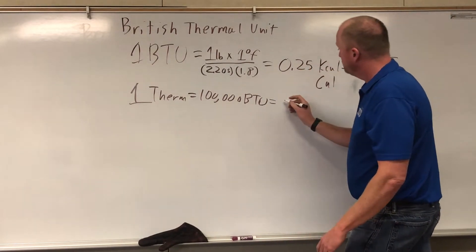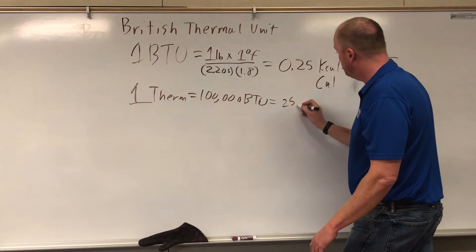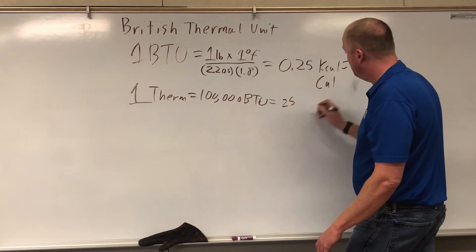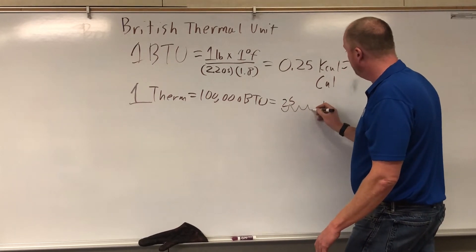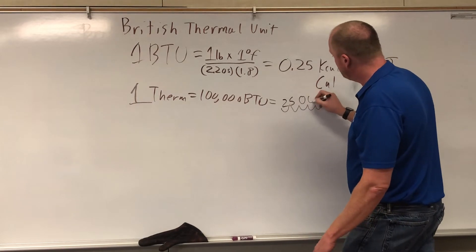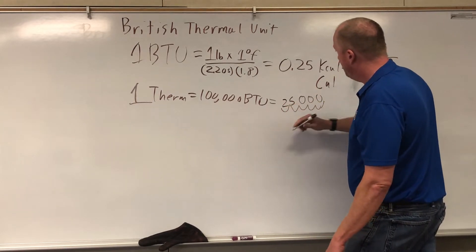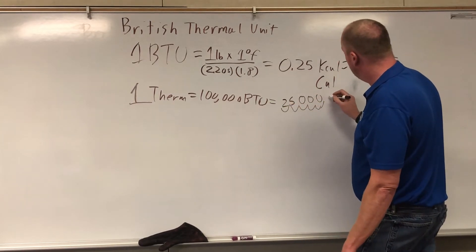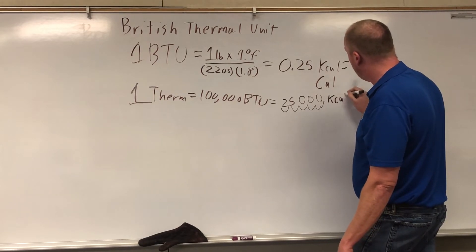1, 2, 3, 4, 5. And so one therm is equal to 25,000 kilocalories.